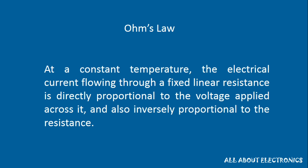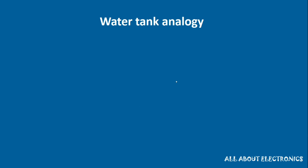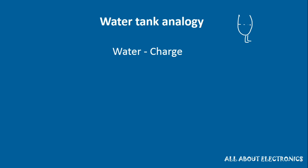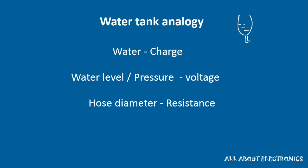Now let's understand Ohm's law by taking a water tank analogy. Let's say we have one water tank and at the bottom of the tank we have connected one hose pipe. In this analogy, the water in the tank represents charge in the electrical circuit. The level of water or water pressure represents voltage. The diameter of the hose pipe represents resistance, and the flow of water represents current.